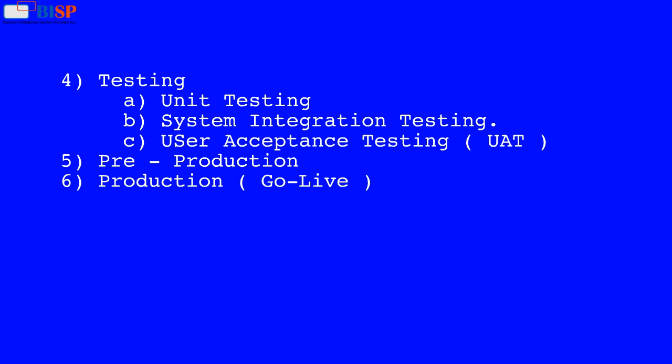The fourth phase is Testing, which includes Unit Testing, System Integration Testing, and User Acceptance Testing, also known as UAT.